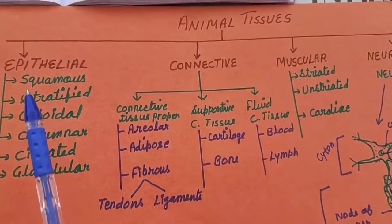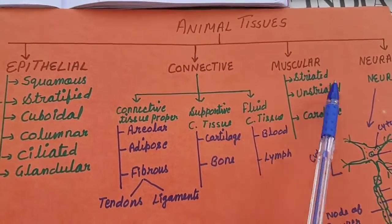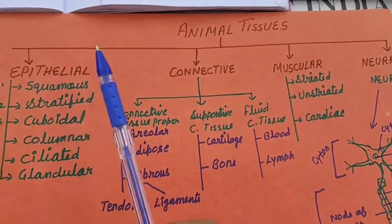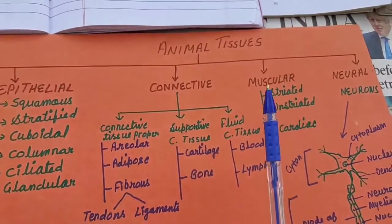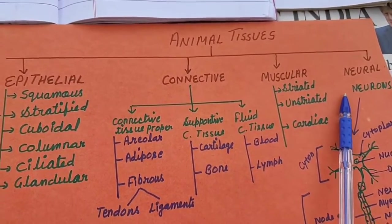Animal tissues are of 4 types: epithelial, connective, muscular and neural.